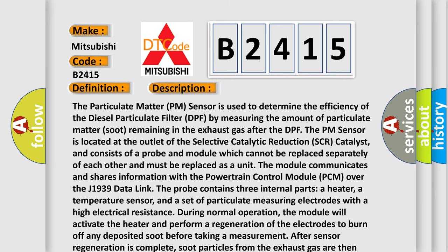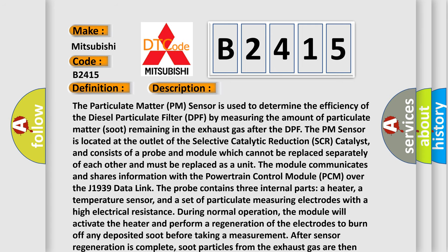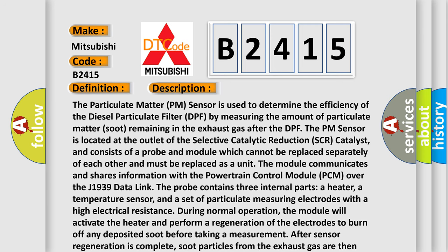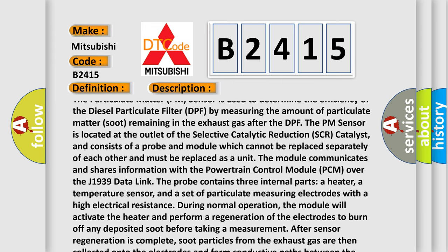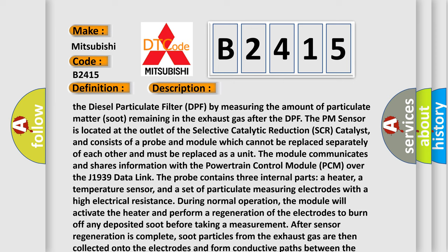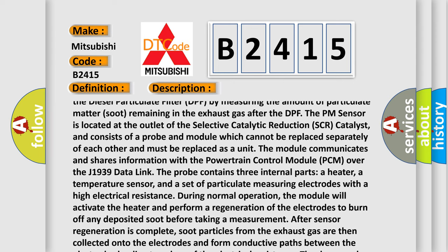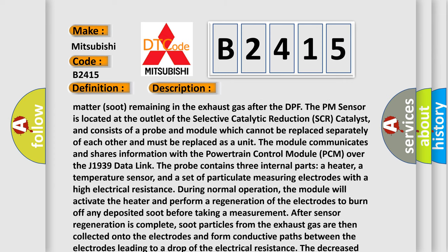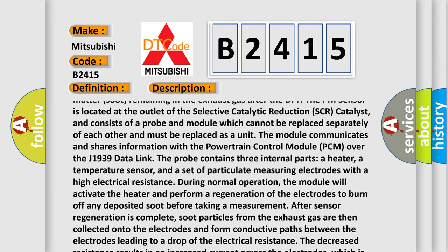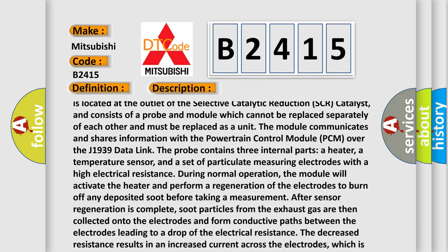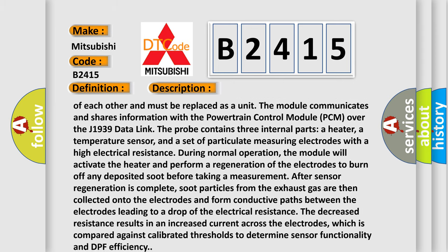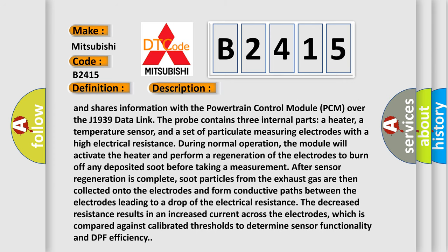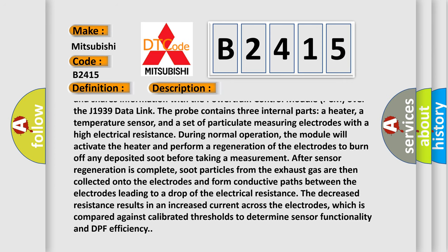The Particulate Matter PM sensor is used to determine the efficiency of the diesel particulate filter DPF by measuring the amount of particulate matter soot remaining in the exhaust gas after the DPF. The PM sensor is located at the outlet of the selective catalytic reduction SCR catalyst, and consists of a probe and module which cannot be replaced separately and must be replaced as a unit. The module communicates with the powertrain control module PCM over the J1939 data link. The probe contains three internal parts: a heater, a temperature sensor, and a set of particulate measuring electrodes with high electrical resistance.